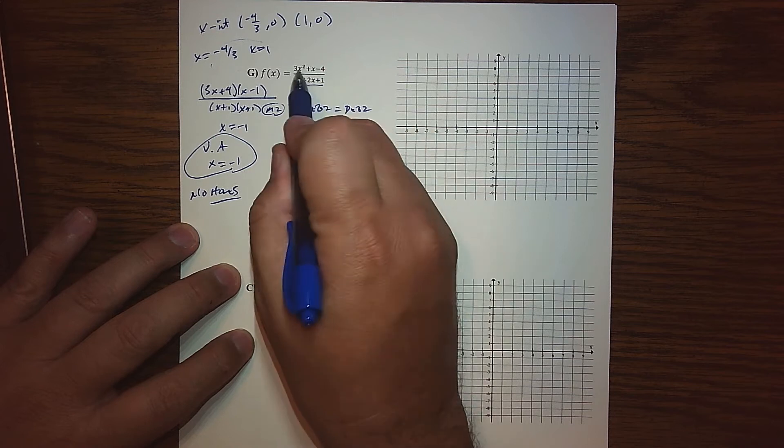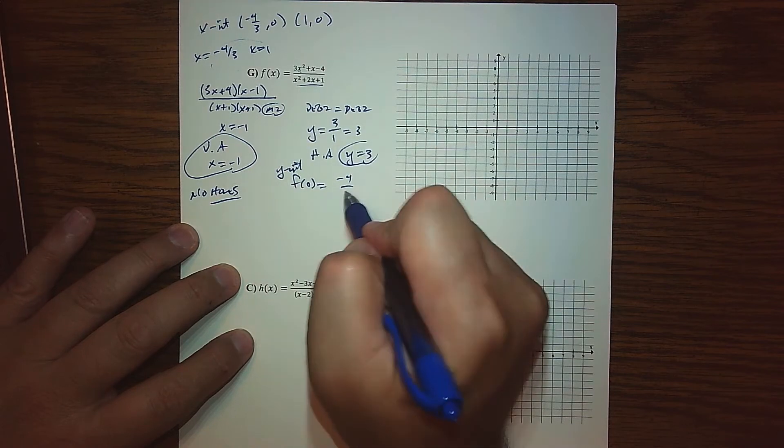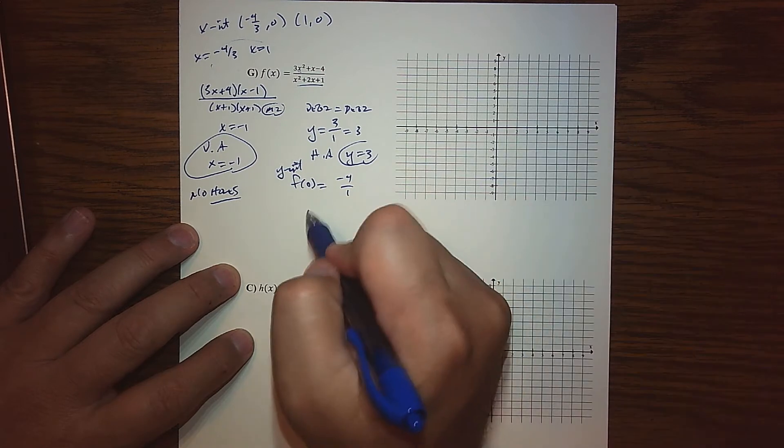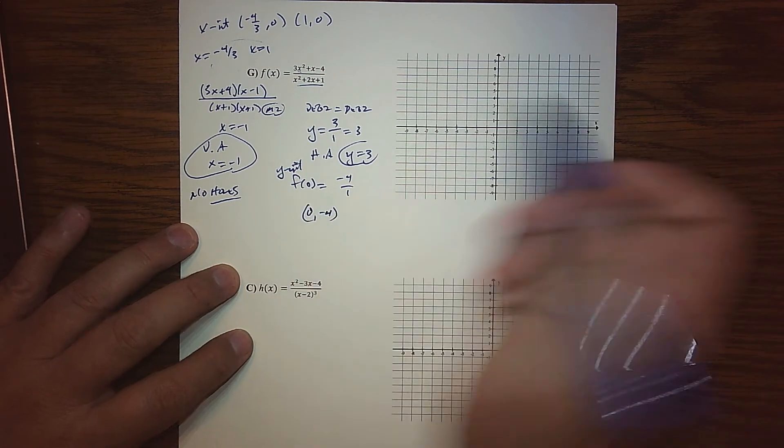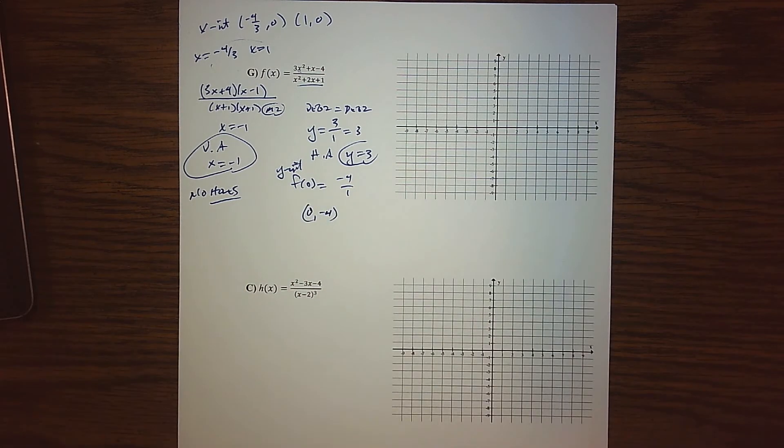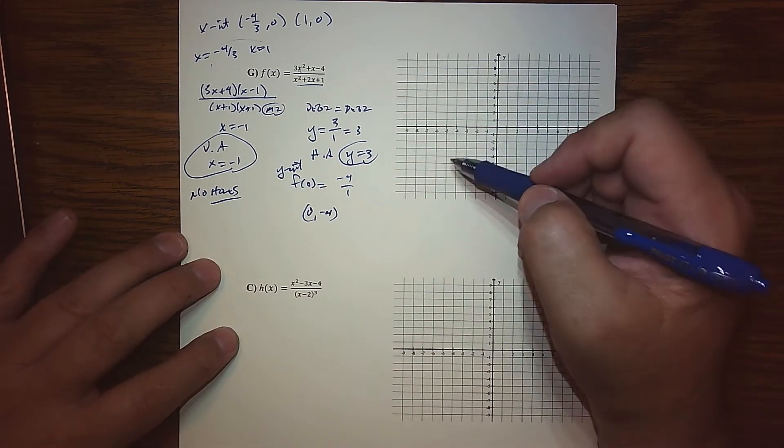So we'll find f of zero, and so that's the y-intercept. If we plug that in there, everything is going to go to zero, so we're left with negative 4 over 1. Can I cut to the chase like that? So we get 0, negative 4.